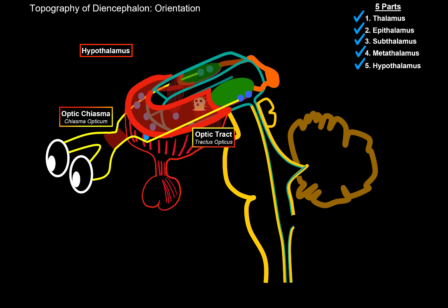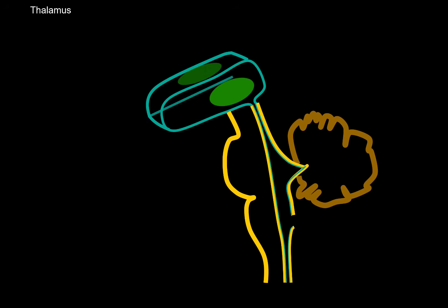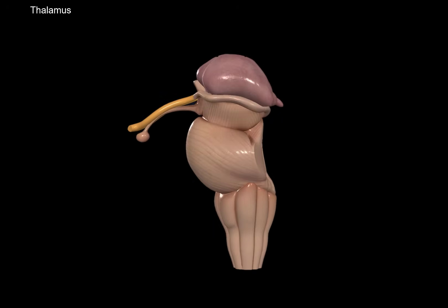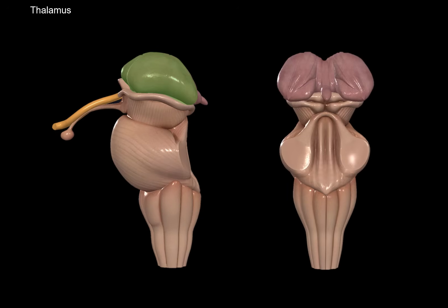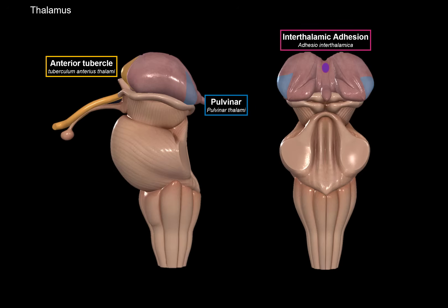Now let's work through the anatomy of the thalamus. The thalamus is an egg-shaped structure. Looking from a posterior perspective, you'll see the thalamus on either side. The most anterior part of each thalamus forms a tubercle shape called the anterior tubercle, the posterior rounded end is called the pulvinar, and in between the right and left thalami there's a connection point called the interthalamic adhesion. Those are the key external features to remember.